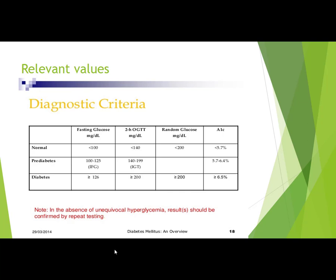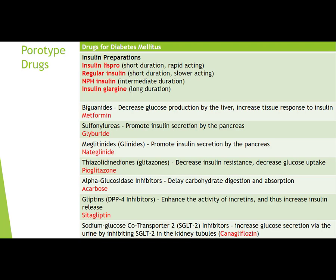The A1C is probably the most accurate way to assess how well a patient's blood glucose has been controlled over the last few months. A normal A1C is below 5.7%. Pre-diabetes is classified as 5.7–6.4%, and a diagnosis of diabetes is made at an A1C of over 6.5%. Levels can go as high as 13 or 14 percent in uncontrolled cases.